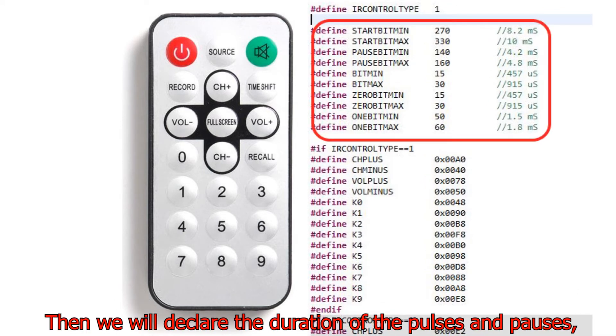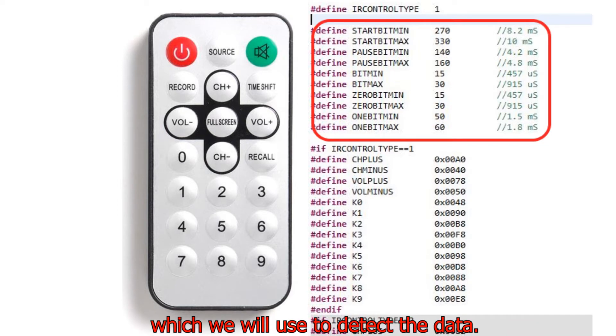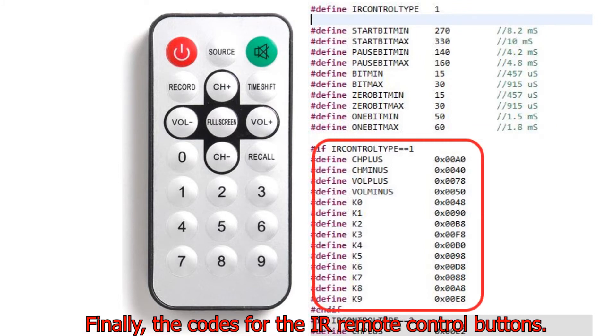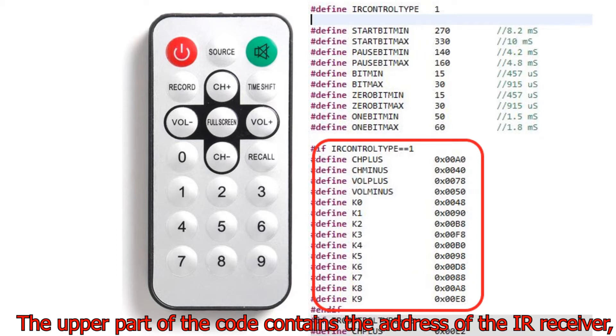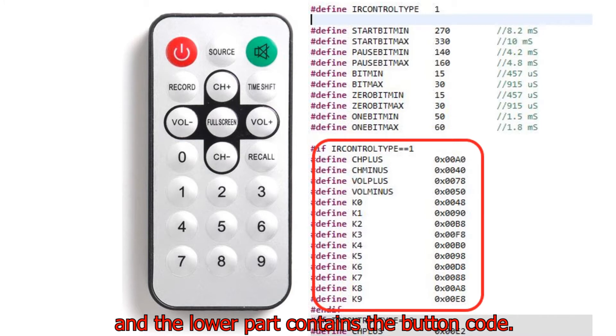Then we will declare the duration of the pulses and pauses which we will use to detect the data. Finally the codes for the IR remote control buttons. The codes are 16-bit.